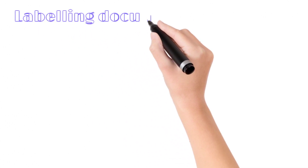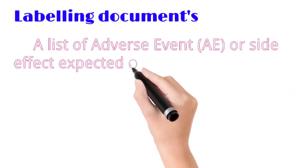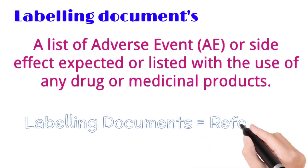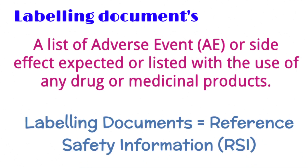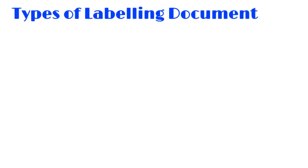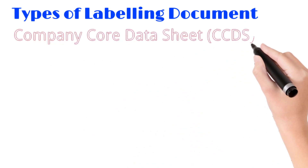What do labelling documents mean in pharmacovigilance? A labelling document is a list of adverse events or side effects expected or listed with the use of any drug or medicinal product. Labelling documents are also called reference safety information documents. For all marketed drugs or drugs which have marketing authorization in any country, there must be a Company Core Data Sheet, in short CCDS — this is a global document.